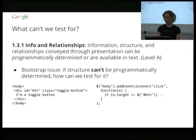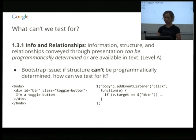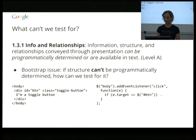Here's what we can't test for automatically: information structure and relationships conveyed through presentation being programmatically determined — if you can't determine the structure programmatically, how can you test for it? A pattern I see quite a lot: a div acting as a button with a click listener applied at the body level that then checks what the event target is. There are legitimate reasons to do this, however it means we have no way of knowing as a testing tool that this div is actually listening for click events, or that it should also be listening for keyboard events.